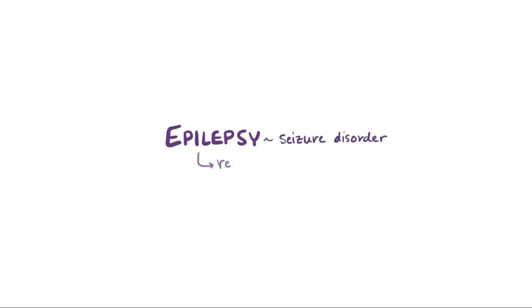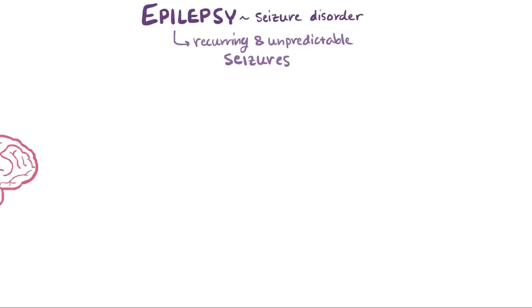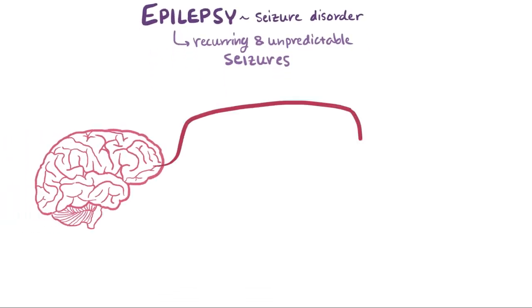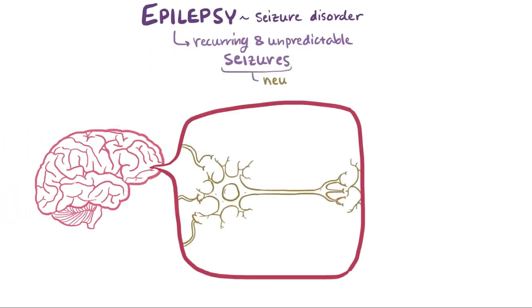Epilepsy means seizure disorder, so people with epilepsy have recurring and unpredictable seizures. A seizure is a period where cells in the brain, or neurons, are synchronously active — or active at the same time — when they're not supposed to be.